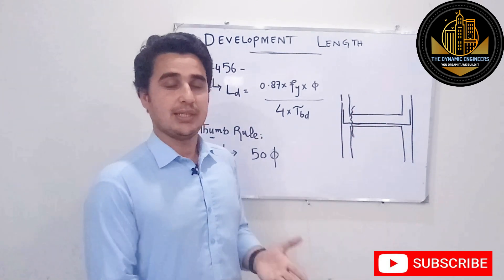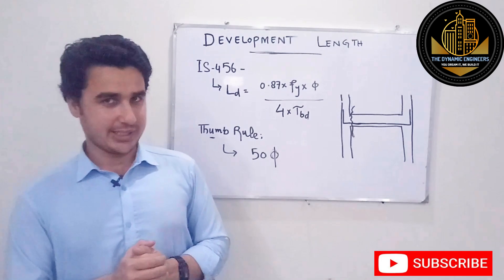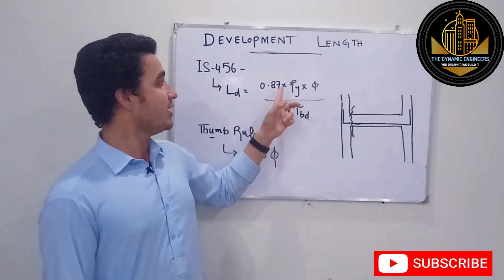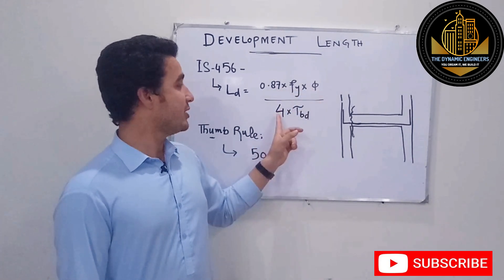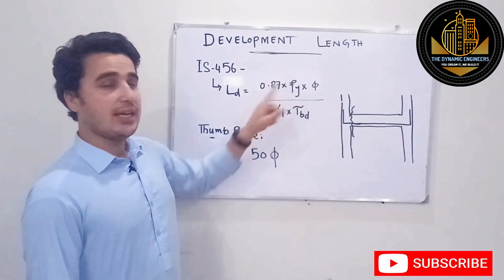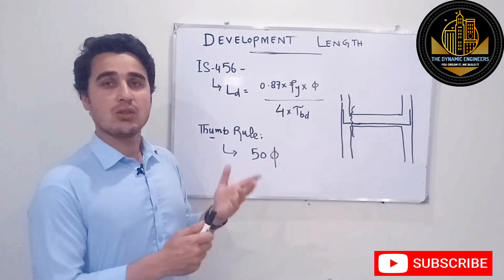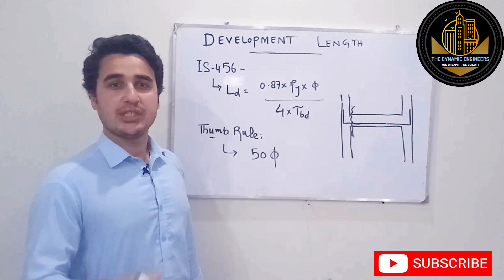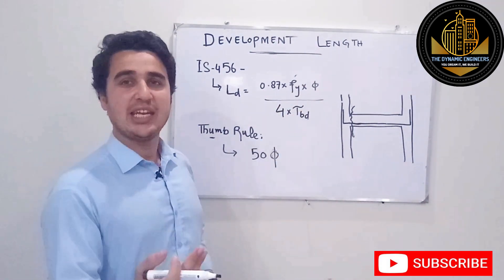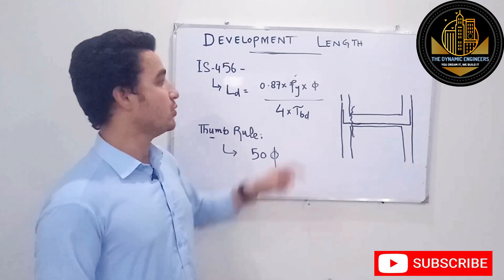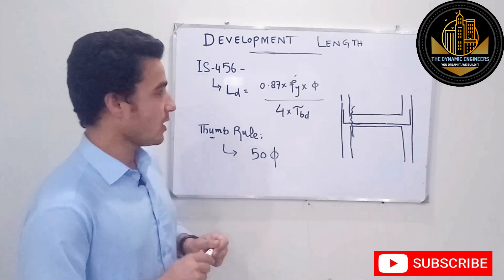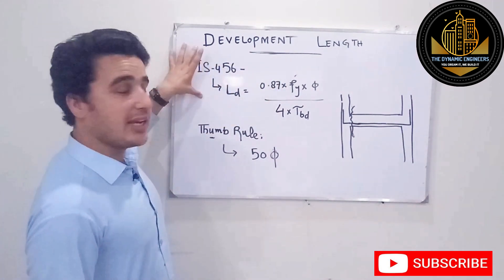Now, how do we calculate development length? As per Indian Standard IS 456, the formula is: LD = 0.87 × FY × φ / (4 × τBD). Here, 0.87 is a constant, FY is the strength of steel — whether you are using G40, G60, or G75 — φ is the bar diameter, which could be 9 mm, 10 mm, 12 mm, 16 mm, etc., and τBD is the bond stress. This is the standard formula as per Indian standard.